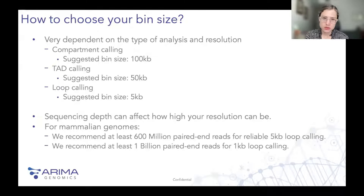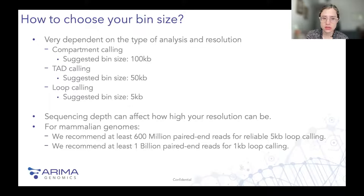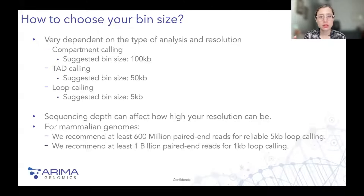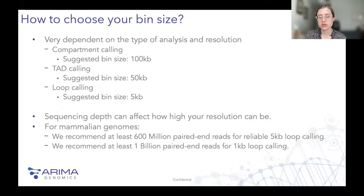Sequencing depth affects how high your resolution can be. If your sample is of good quality and your library is complex enough — meaning lots of unique reads and not too many duplicates — you can go to higher resolution. For mammalian genomes specifically: for 5 kb loop calling, we suggest sequencing at least 600 million paired-end reads. For 1 kb resolution, we recommend at least 1 billion paired-end reads.